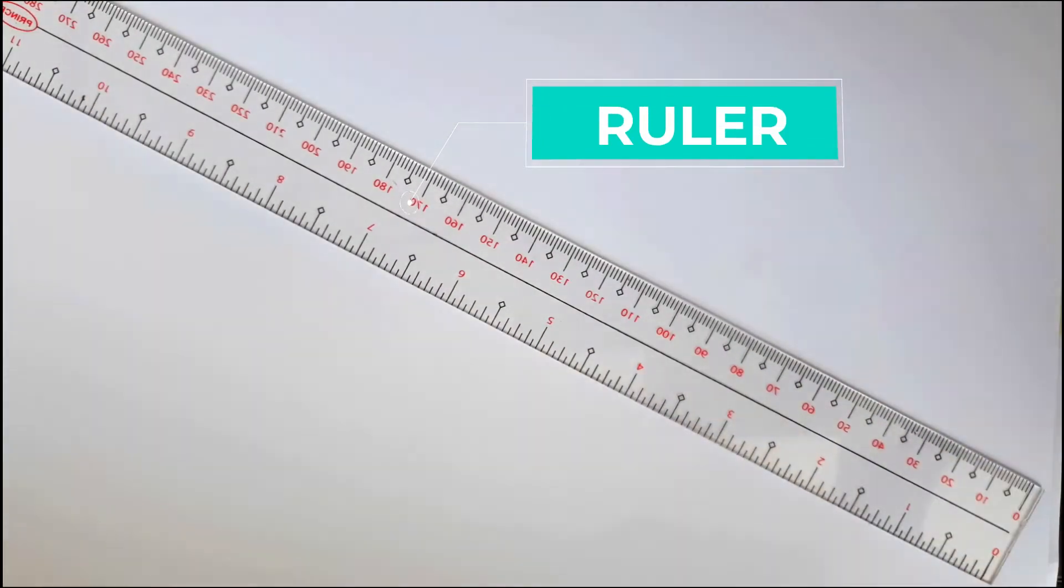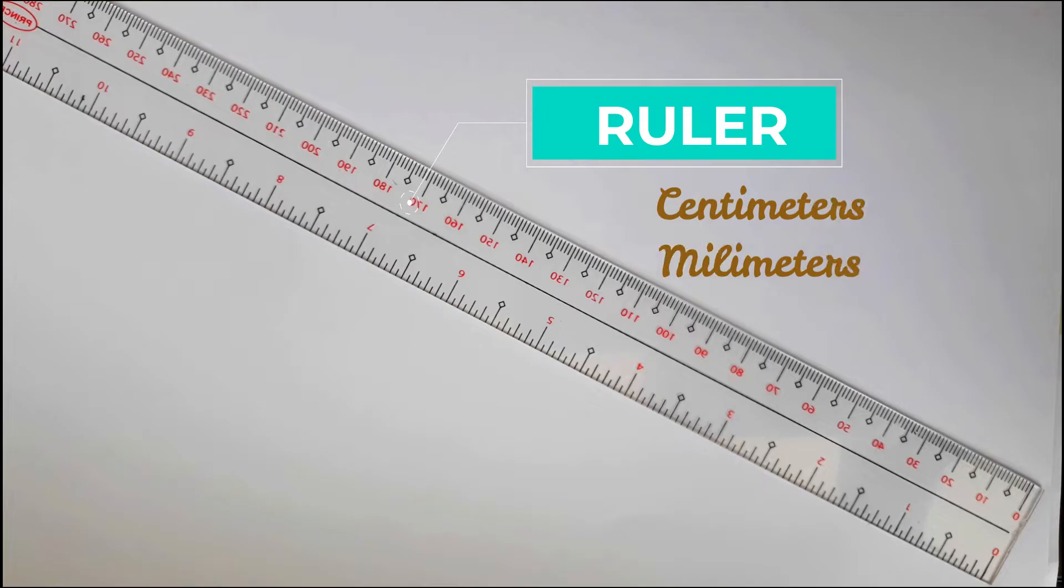First, we have the ruler. It is smaller than a meter scale. Generally, it is 6 inches or approximately 15 centimeters. It has centimeter and millimeter marks on one edge. The opposite edge has inch marks. The marks on the ruler are called graduations, and the ruler is called a graduated scale.